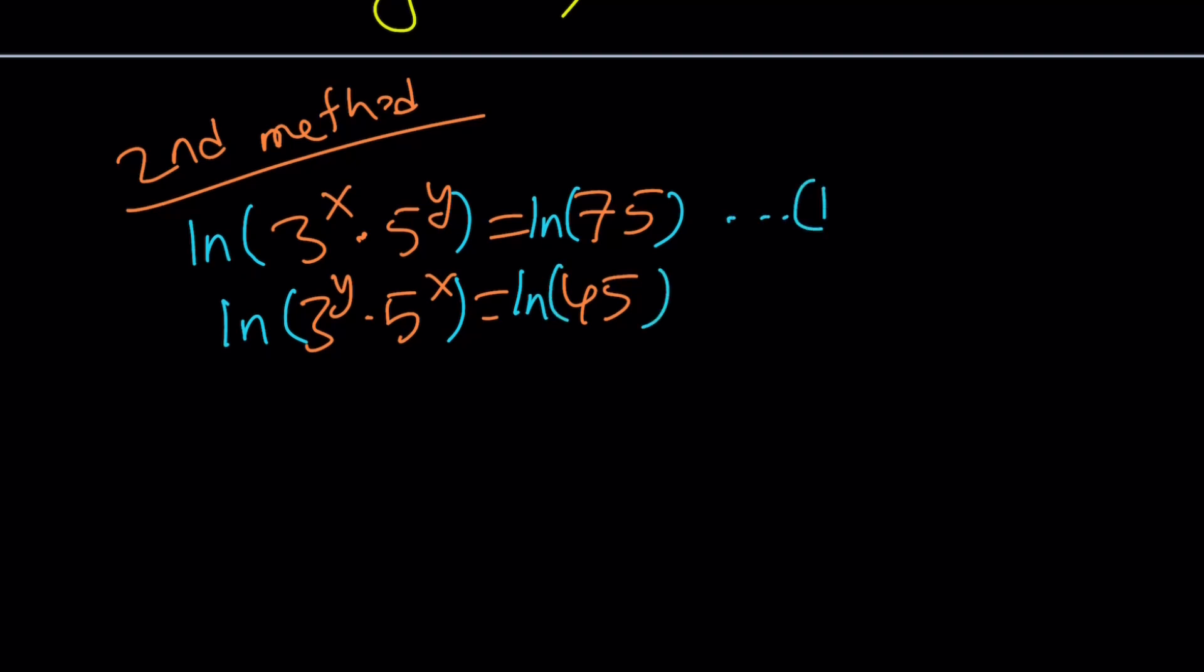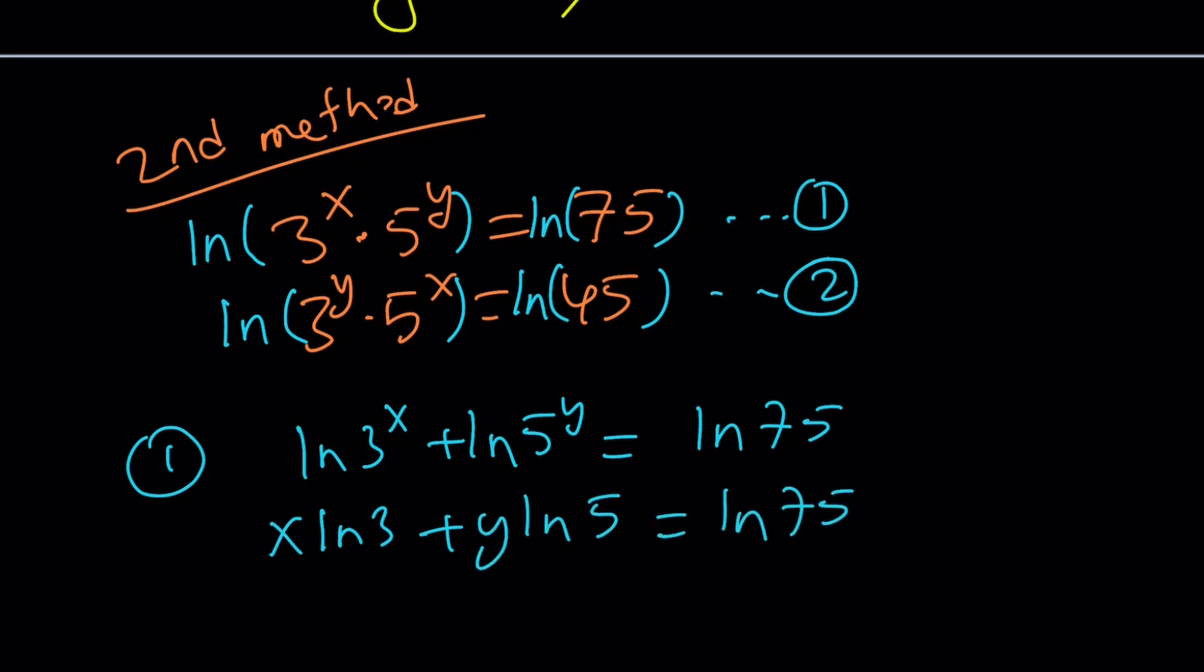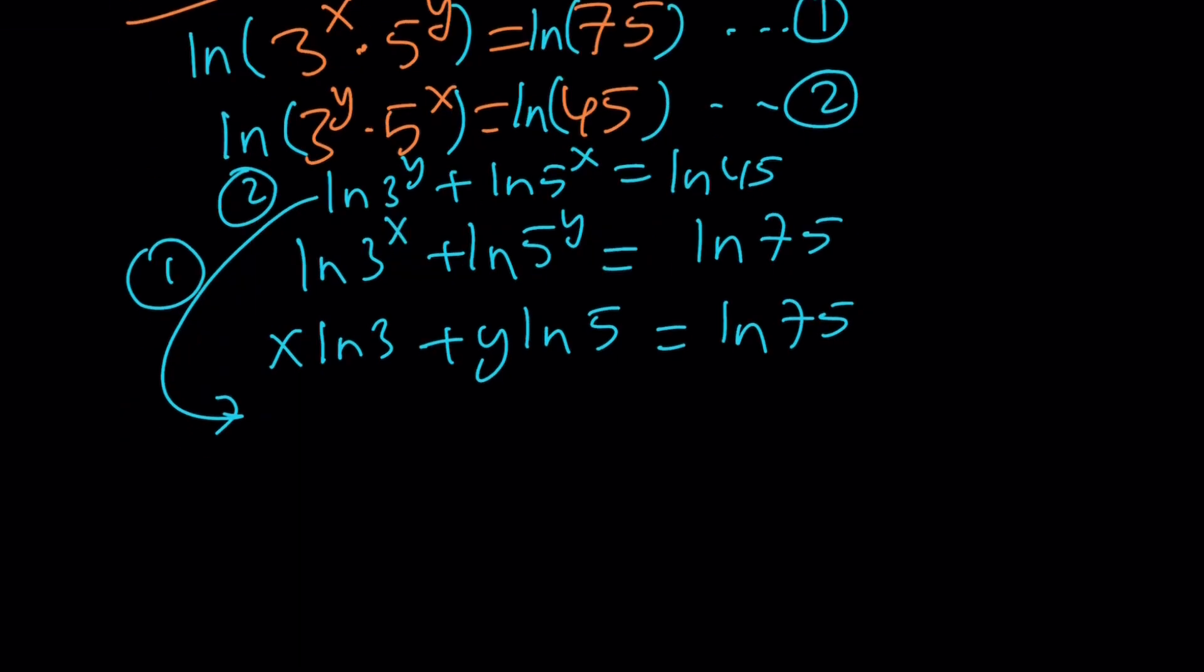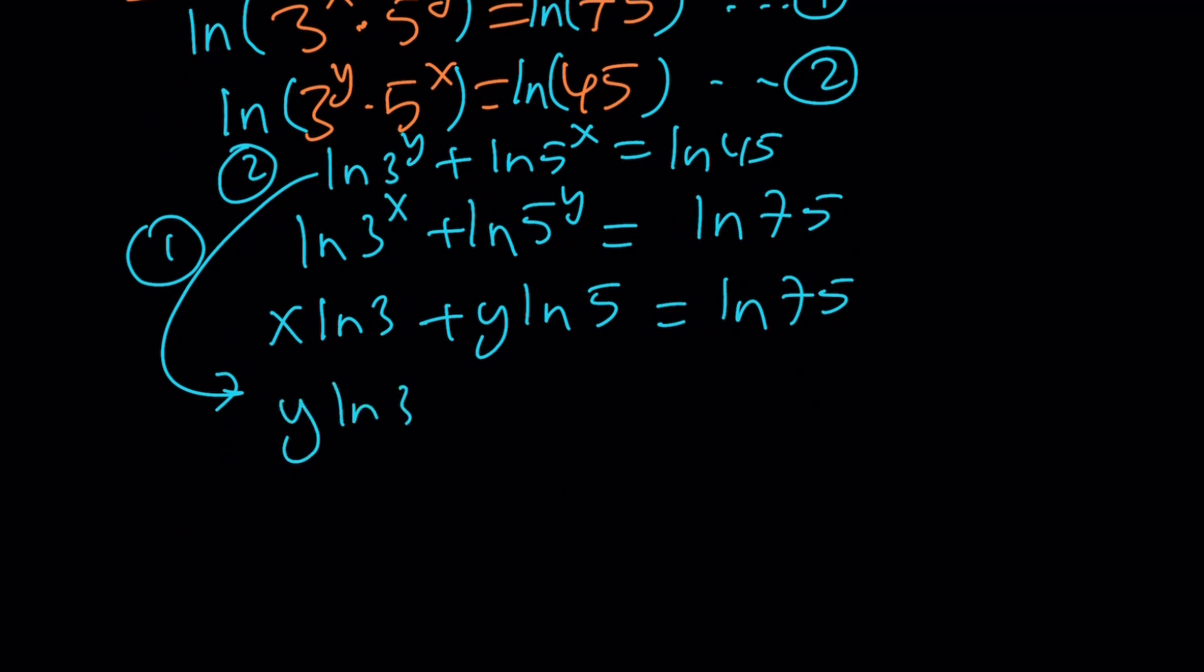From the first equation, I get ln 3 to the power x plus ln 5 to the power y equals ln 75. And this turns into x ln 3 plus y ln 5 equals ln 75. And from the second equation, I get ln 3 to the y plus ln 5 to the x equals ln 45.